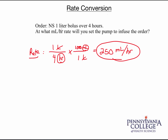As mentioned, some students might look at the beginning of this problem and immediately know that 1 liter is equivalent to 1,000 mL. At that point you may feel comfortable writing 1,000 mL divided by 4 hours, which will also result in the solution of 250 mL per hour.